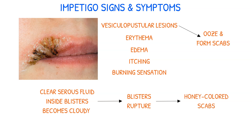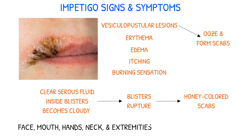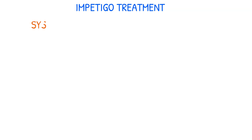The face, mouth, hands, neck, and extremities are most commonly affected. As nurses and nursing students, it's important to know how to manage and treat impetigo. The treatment approach involves both systemic and local interventions.